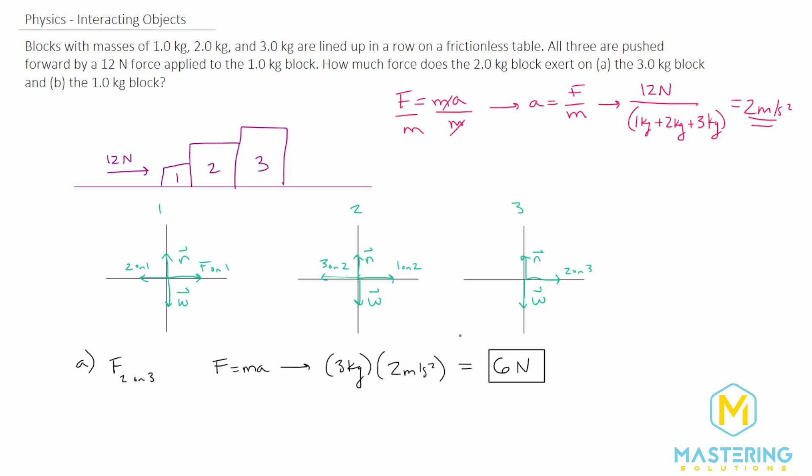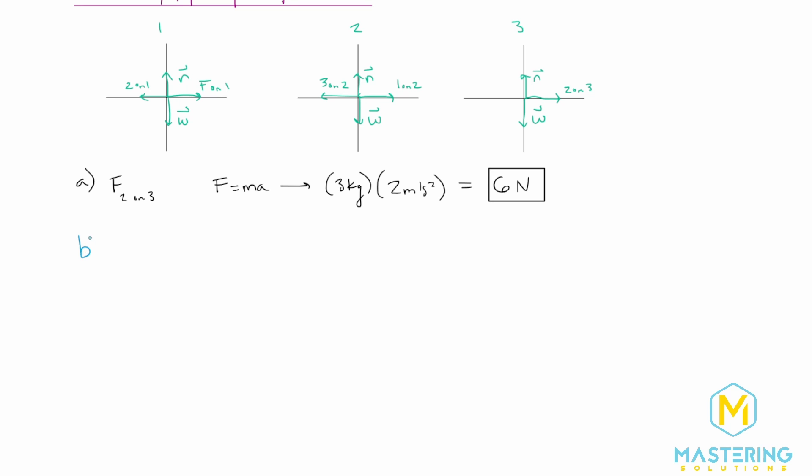Now part B is a little bit trickier. Not too bad, though. So let's come down here. So for B, we need to figure out the force of 2 on 1. So we need this force vector right there. For this one, we need to sum the forces in the x direction. So sum of the forces in the x. So we have the force on 1, and then we're going to subtract from that 2 on 1. So those are really the only forces in the x direction right there. So 2 on 1. And that is equal to M1 times A. Because it is accelerating, so it's not in equilibrium. So we have mass of the first block times the acceleration.